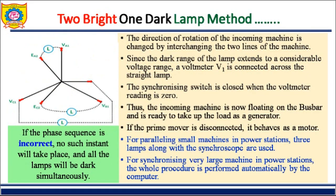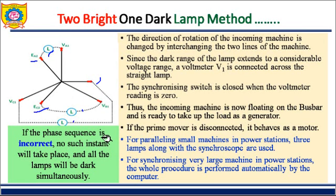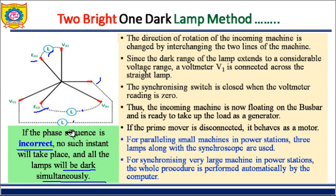You can check this in the phasor diagram: voltage E1, E2, and E3. The lamp is connected directly here, and the cross connections are made for the others. If the phase sequence is incorrect, no such pattern will occur and all lamps will be dark simultaneously. In that case, the direction of rotation of the incoming machine must be changed by swapping any two lines.